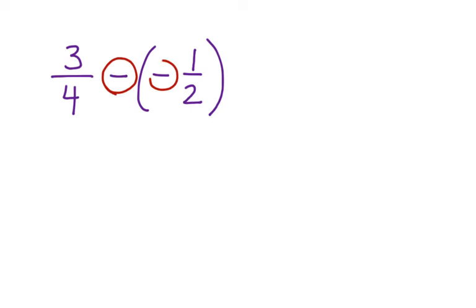Let's say we have 3 fourths and we're going to take away a negative 1 half. We know that the opposite-opposite property says that when you're taking away a negative, it's the same thing as adding the opposite of the second number, or adding a positive. So we can rewrite this problem as 3 fourths plus 1 half.